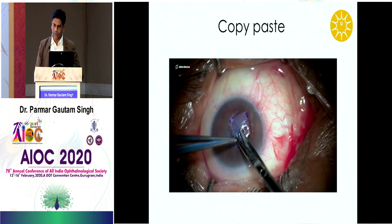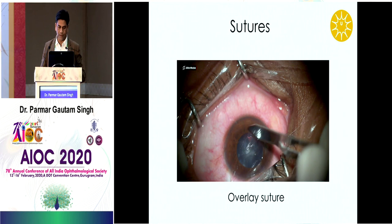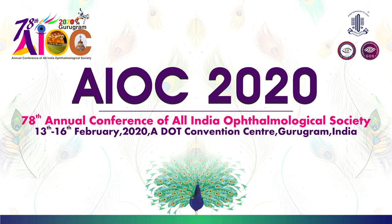Take-home message: there are many options for management of perforations. Consider the size, infection activity, and availability of donor tissue when choosing. Glue is best for small perforations — less surgical time and avoids sutures. Patch grafts are best for larger perforations and active inflammation — solving therapeutic and tectonic purposes simultaneously. Thank you. This concludes our back-to-basics session on ocular surface surgeries.